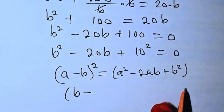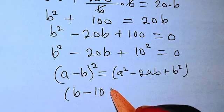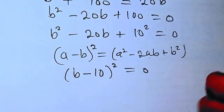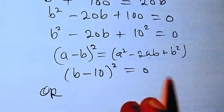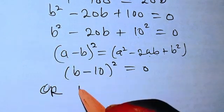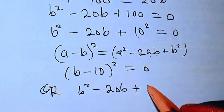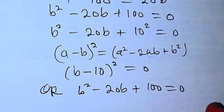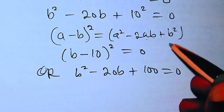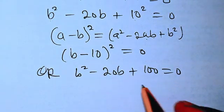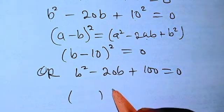So now definitely we are going to have this factorized as B minus 10, B minus 10 squared equals 0. Or better still, you can say that from here B squared minus 20B plus 100 equals 0.